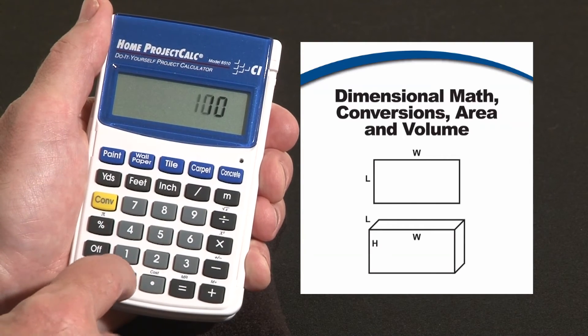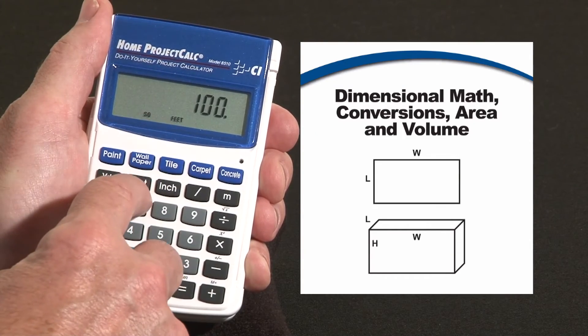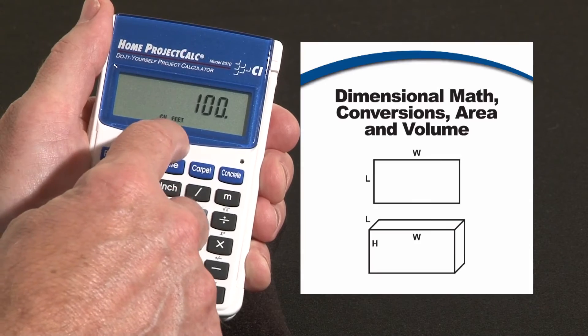So I can just hit 100, hit feet, press it again, it says square feet. If I press feet one more time, it'll go to cubic feet.